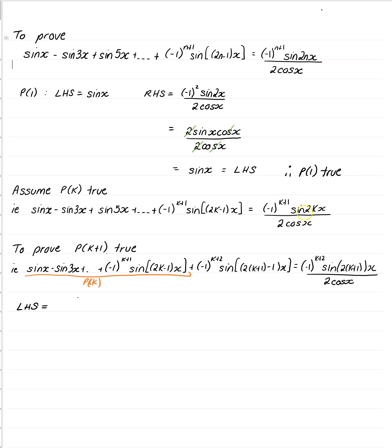So we can just replace all of that with our expression here. We'll replace that with minus 1 to the k plus 1 sine 2kx all over 2 cos x, and what comes next is this,